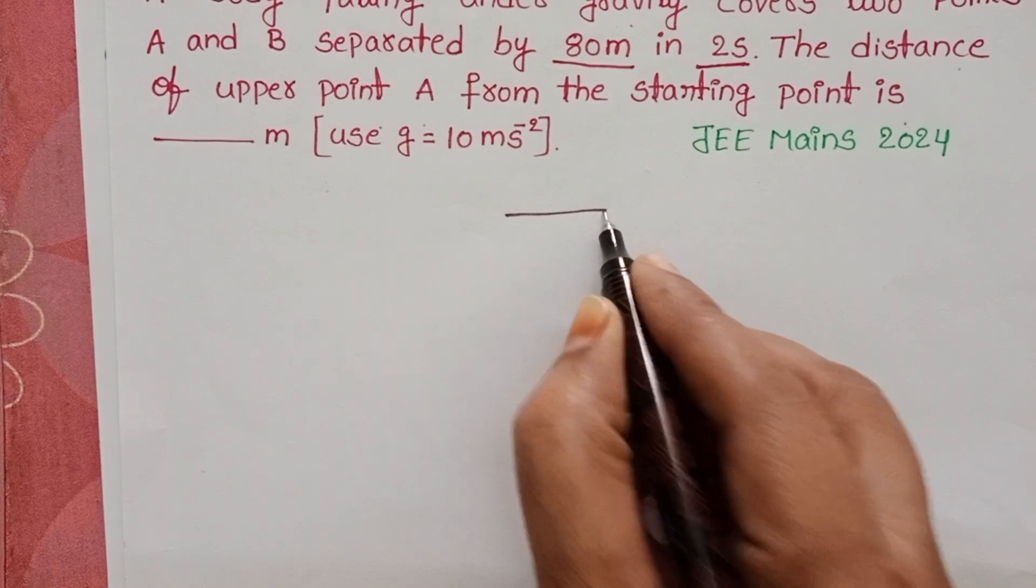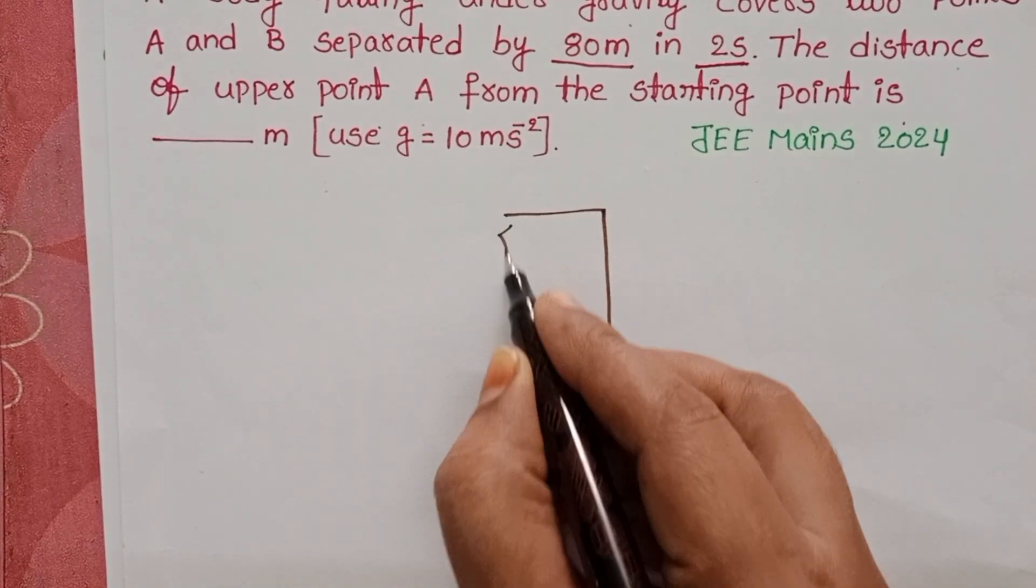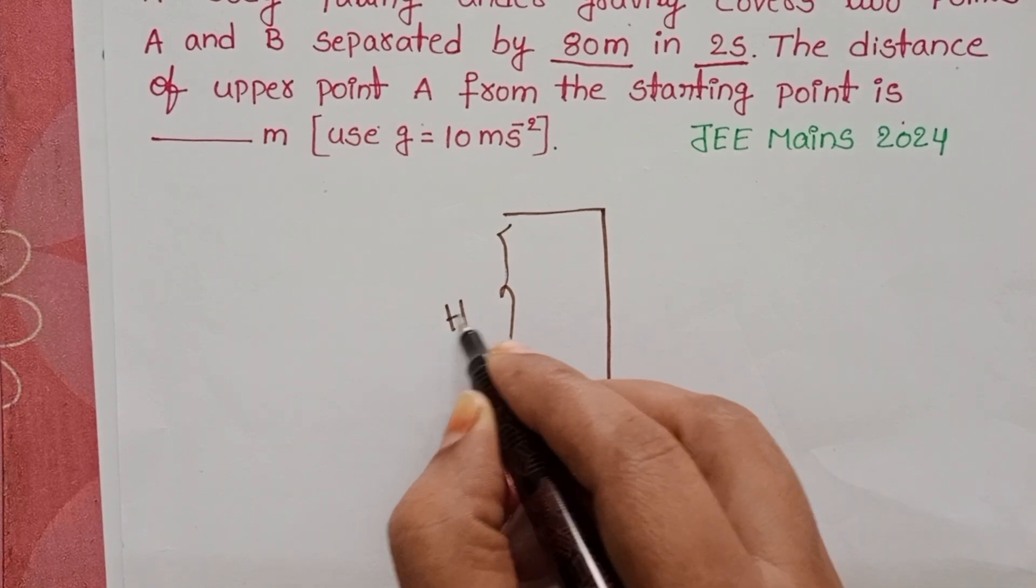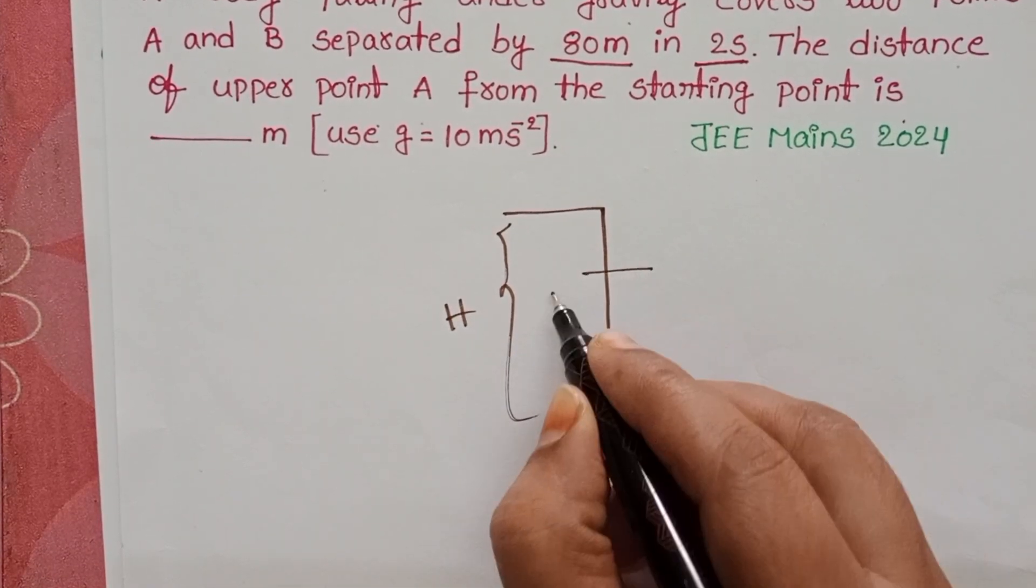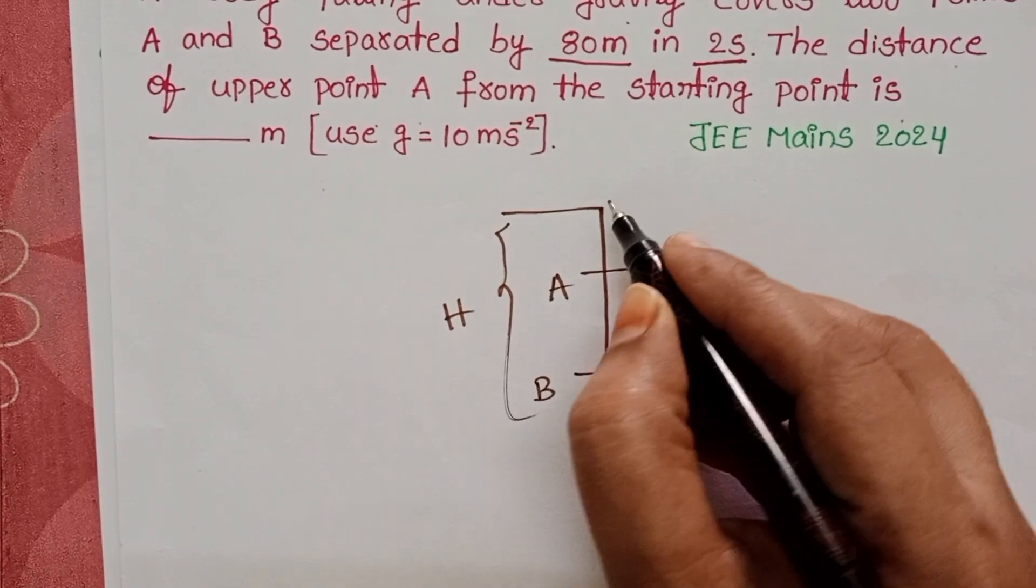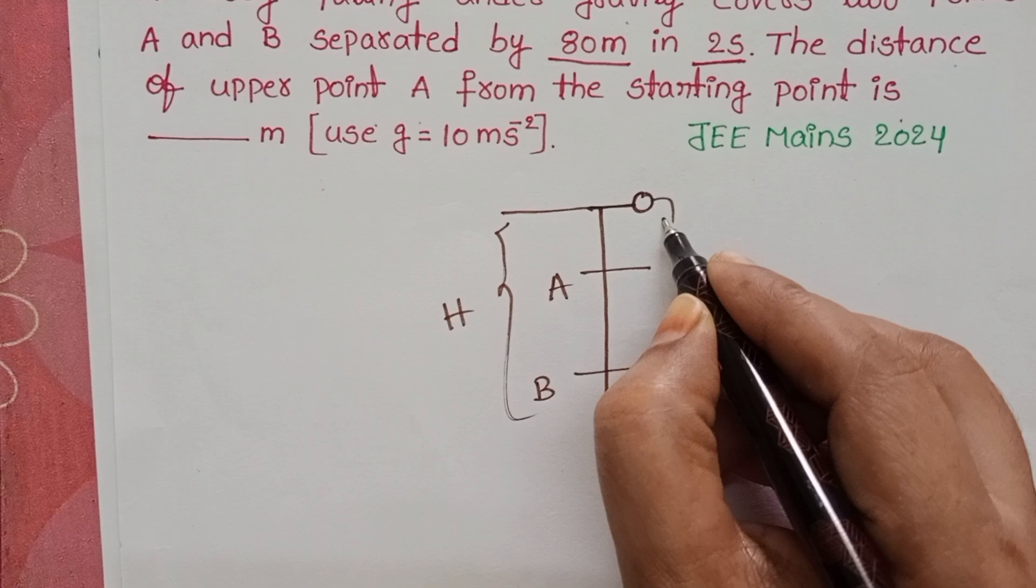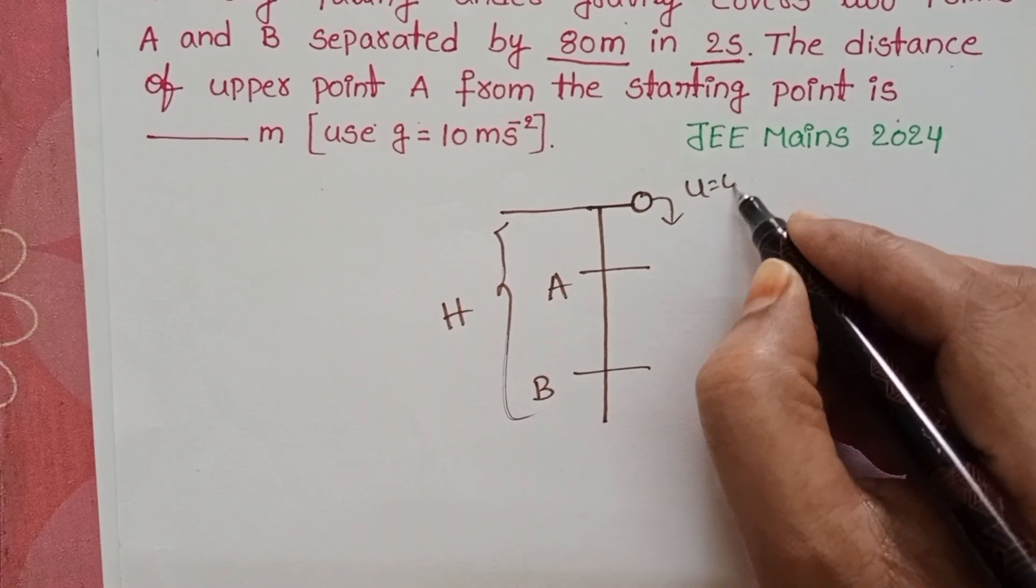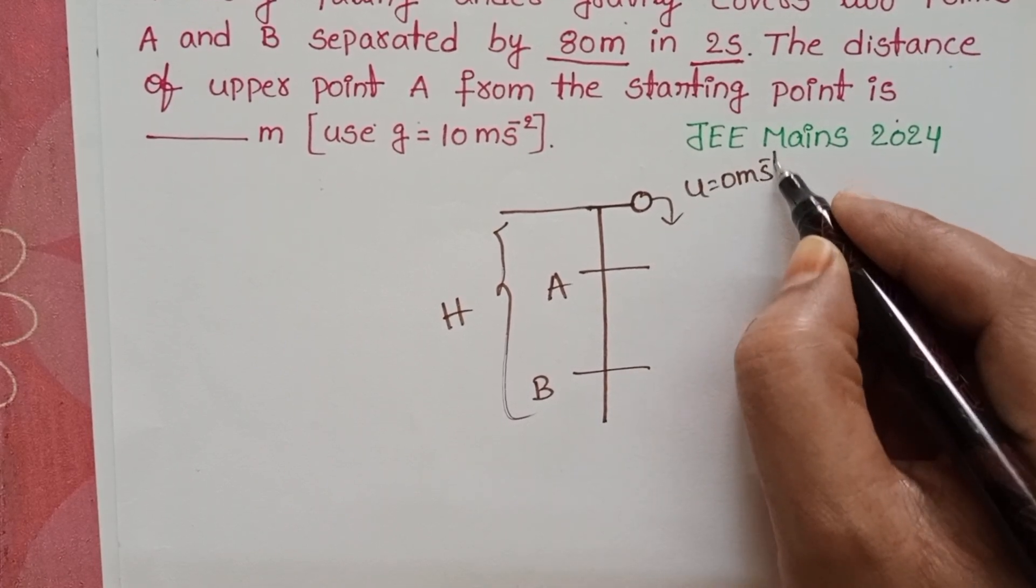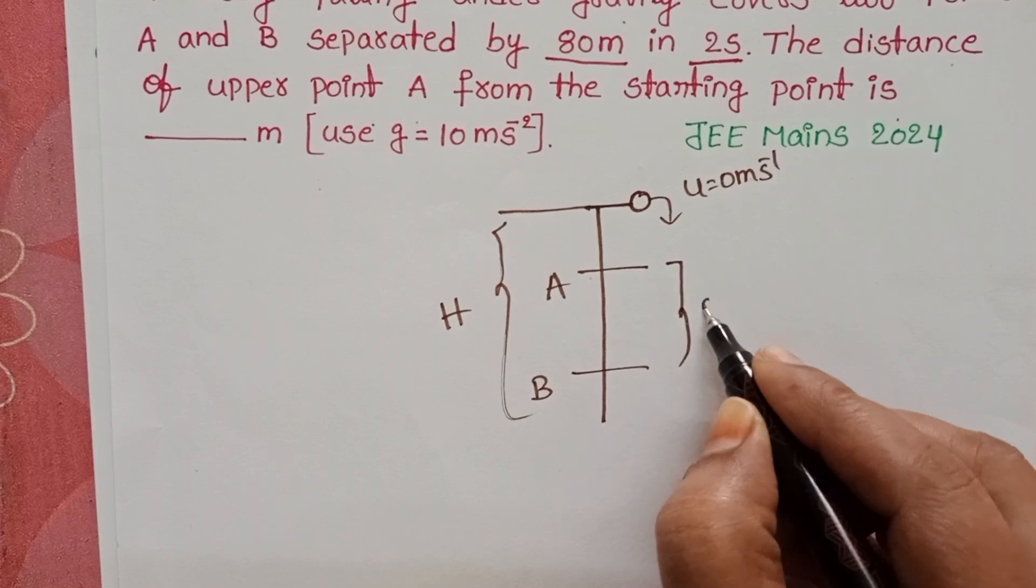A body is dropped from a certain height. Let us take total height equals H. Here are two different points A and B. This is the initial point, body is dropped from this point. Initial velocity equals 0 meter per second. The distance between A and B is 80 meters.